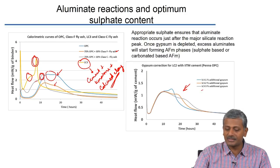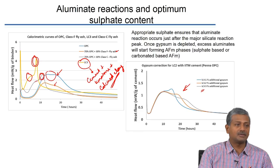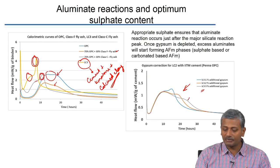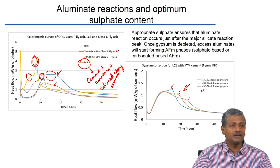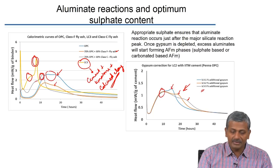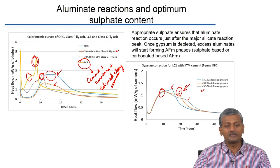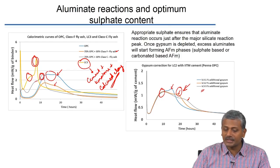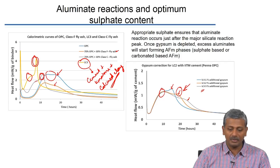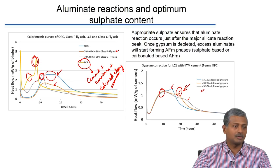Gypsum optimization is demonstrated with different LC3 systems having 1%, 2%, and 3% additional gypsum over what is present in the cement. The goal is to push the aluminate peak slightly away from the silicate peak to ensure proper strength development. The 2% gypsum system is preferred over 1% because at 1% the aluminate peak is too close to the silicate peak. Appropriate sulphate ensures the aluminate reaction occurs just after the major silicate reaction peak, after which excess aluminate starts forming AFM.